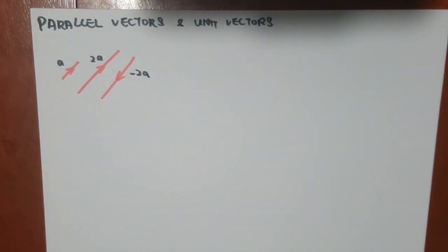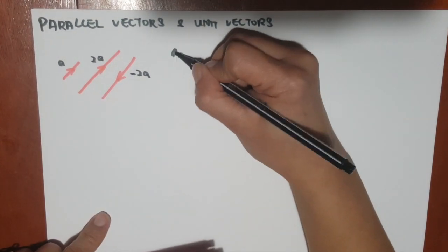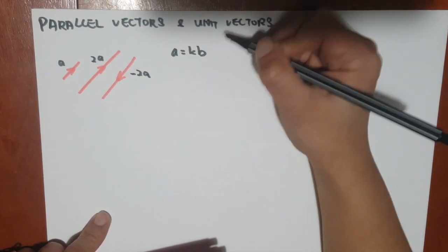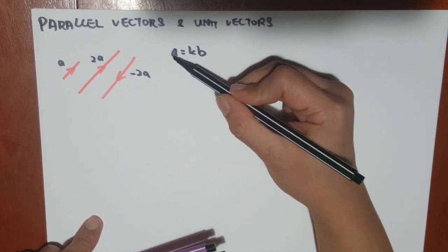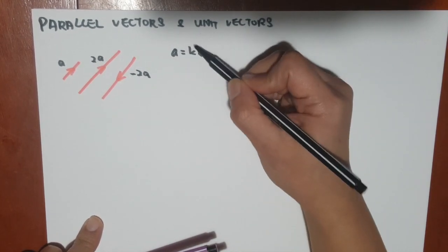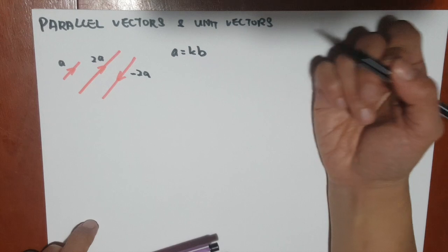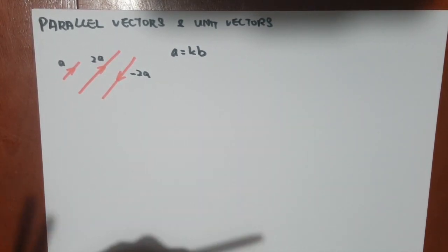So the idea of parallel is it's related to this equation a equals to kb, where k is the constant. So it means that if two of the vectors are parallel, they are sort of related to each other. It's just that maybe the number in front is different. So it could be a number, it could be negative, it could be a fraction.